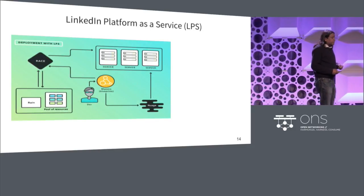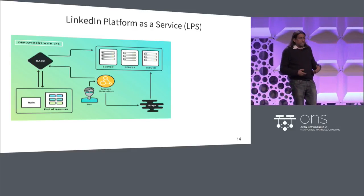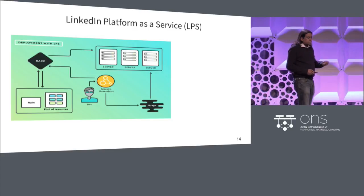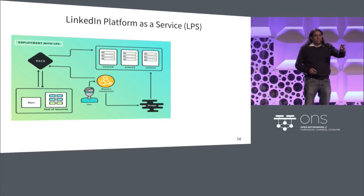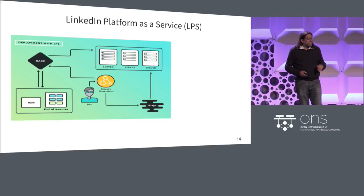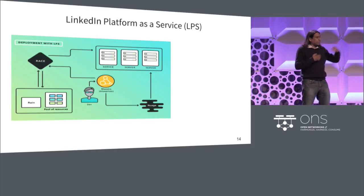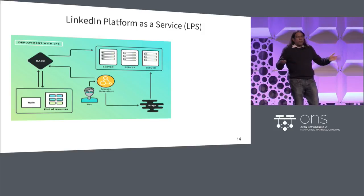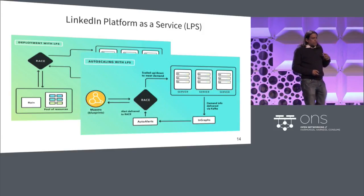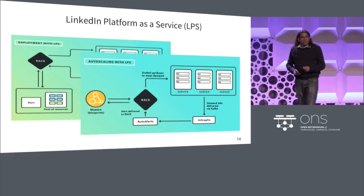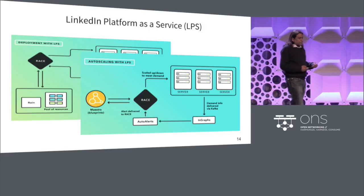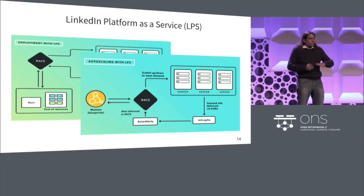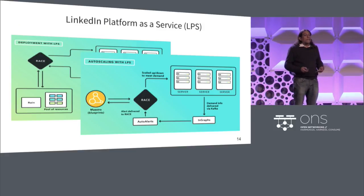When you start thinking about that, at LinkedIn we created something called LinkedIn Platform as a Service — it's all internal cloud. A developer puts in a little blueprint information and ships it out. We have a system called Rain and Race that finds the best server or servers based on your compute and storage demand, populates that, and then once deployed, you don't think about it at all. Another feature auto-scales it based on the demand of the application.